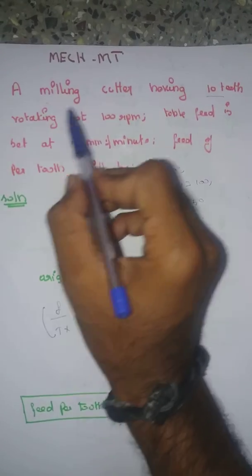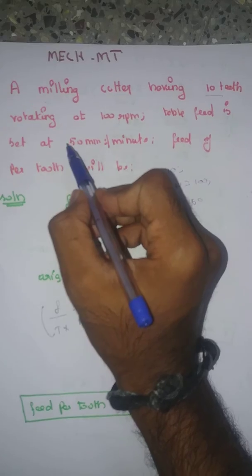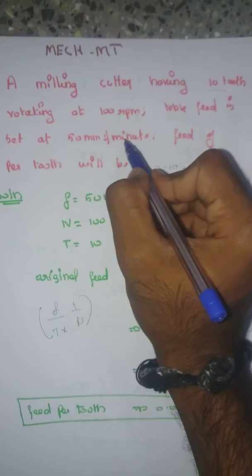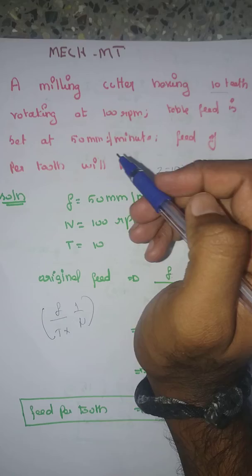The milling cutter has 10 teeth, rotating at 100 rpm. The table feed is 50 mm per minute. The feed rate per tooth will be.